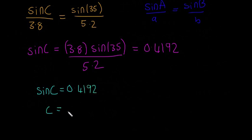That means our angle C is going to be the inverse sine. So sine minus 1, 0.4192. And again, you're going to use your calculator for that. And you're going to find that C is equal to about 24.8 degrees.